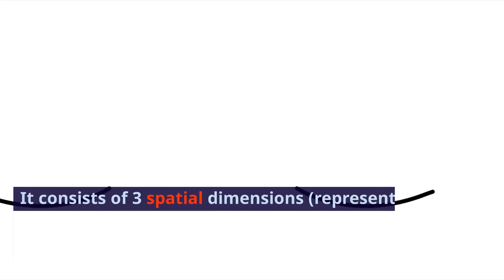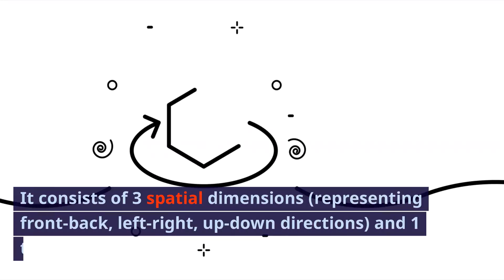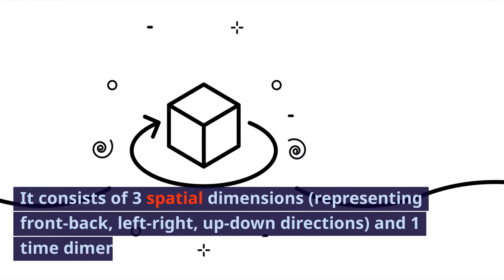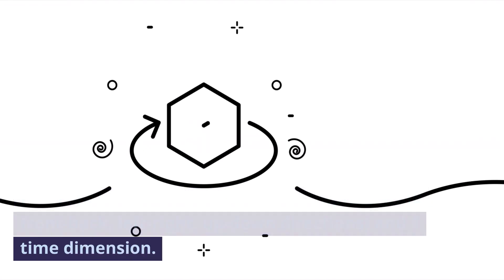The 4th dimension is the space-time in which our universe exists. It consists of three spatial dimensions — representing front-back, left-right, and up-down directions — and one time dimension.